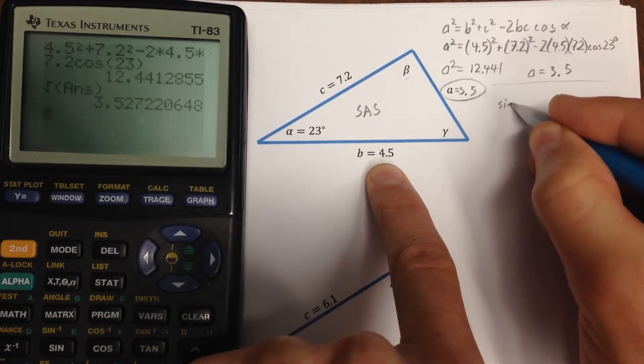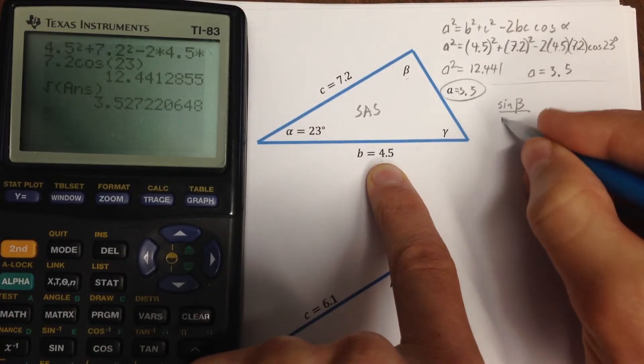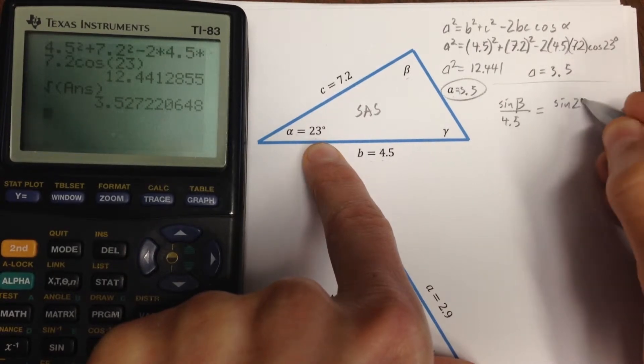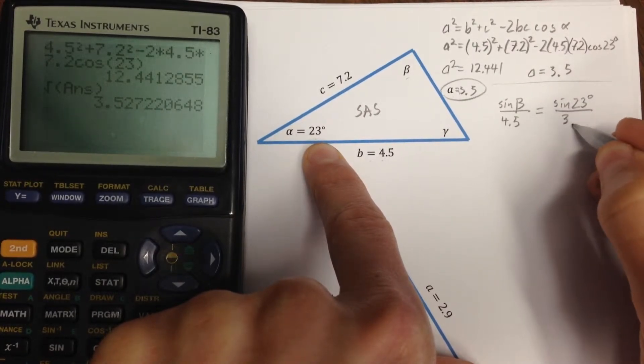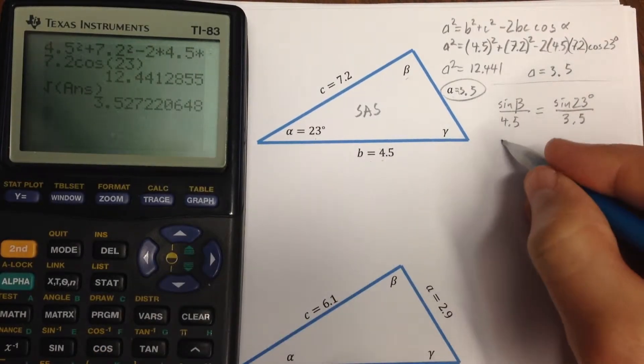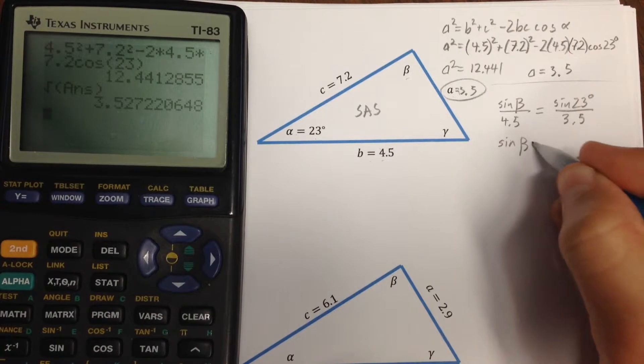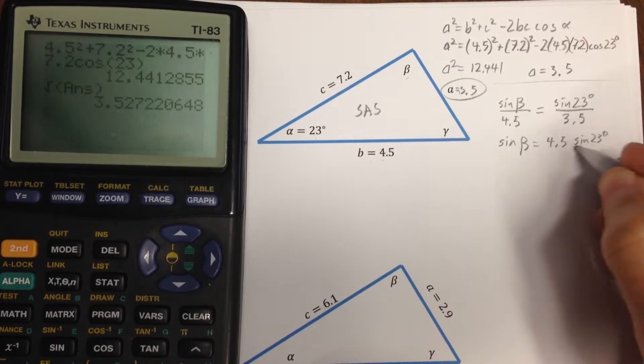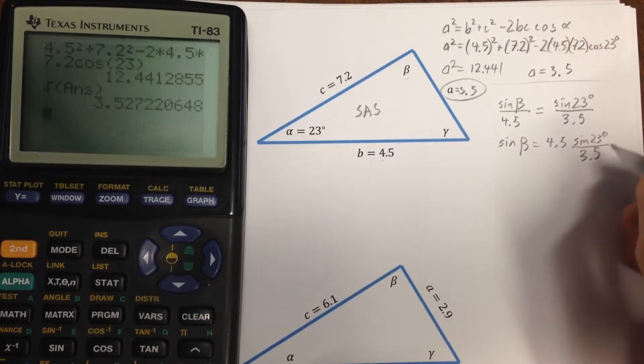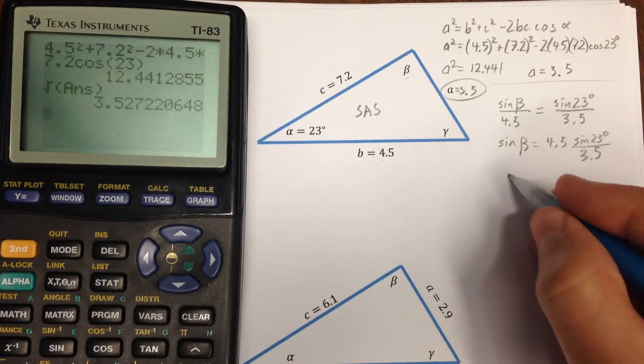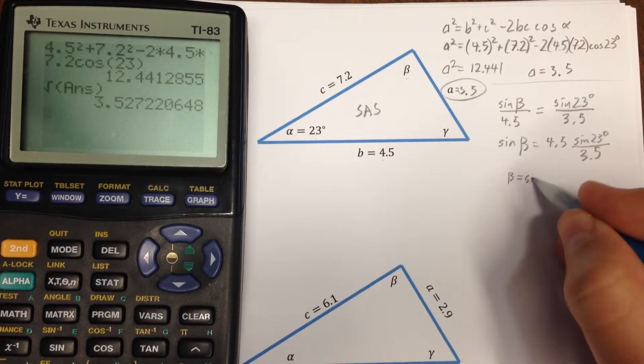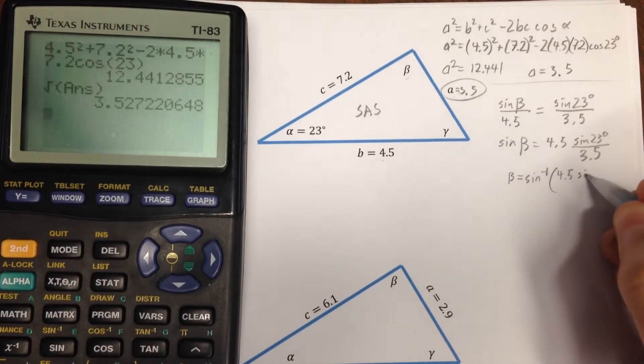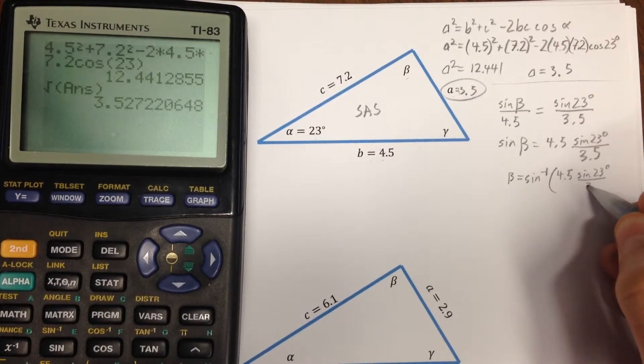It's opposite the second smallest side. So let's see, what do I have here? I have sine beta over 4.5 equals, and here's the pair that I have, sine 23 degrees over 3.5. So that tells me that sine beta equals 4.5 times sine 23 degrees over 3.5. So, you could calculate this number. I'll go ahead and say beta equals sine inverse of 4.5, sine of 23 degrees over 3.5.